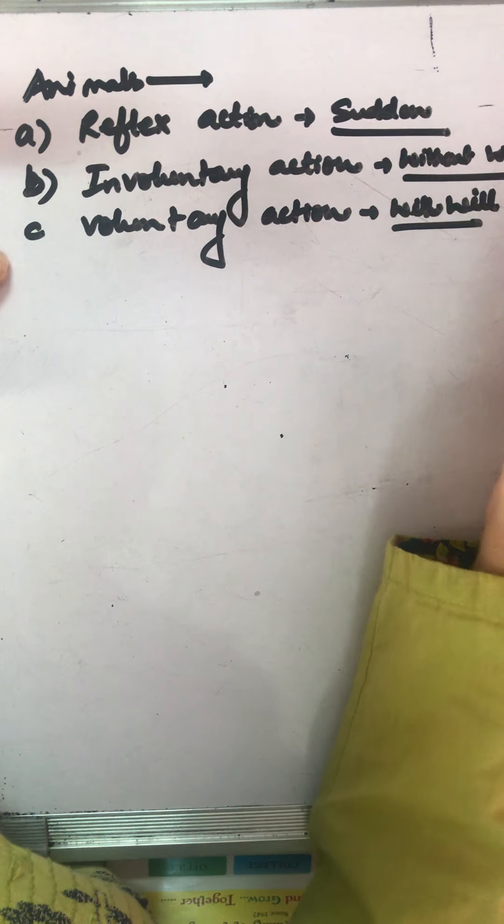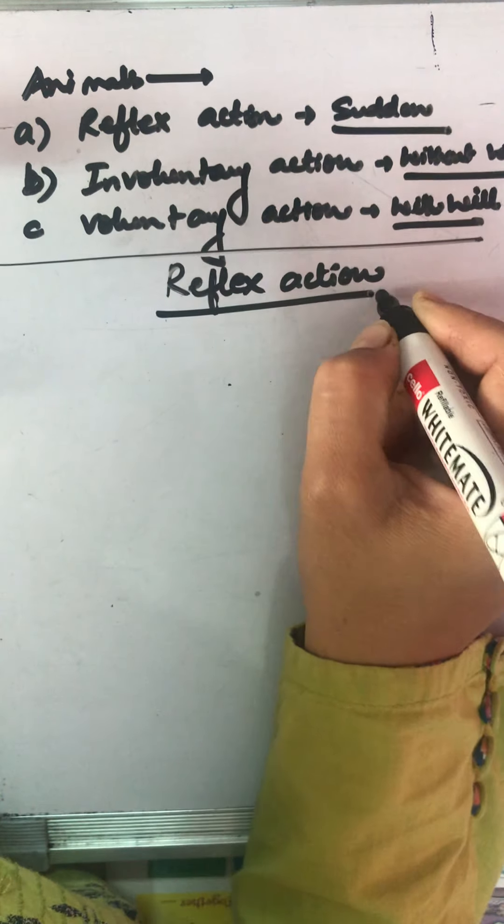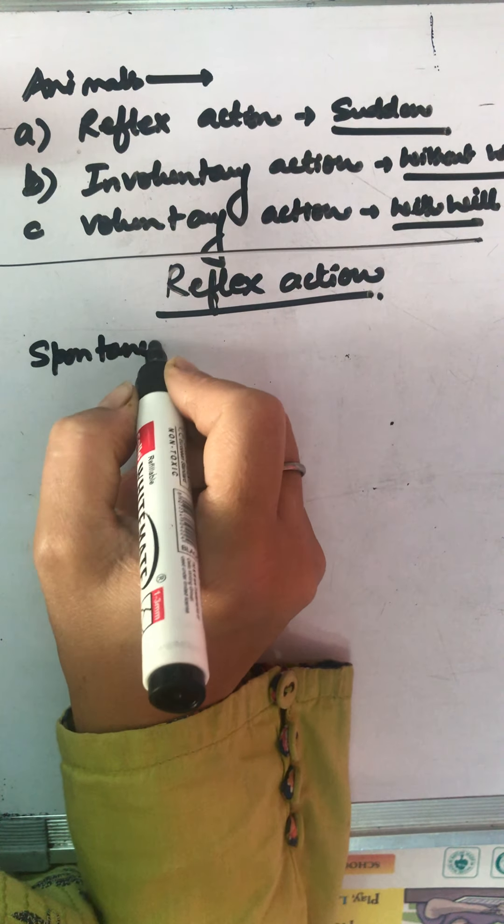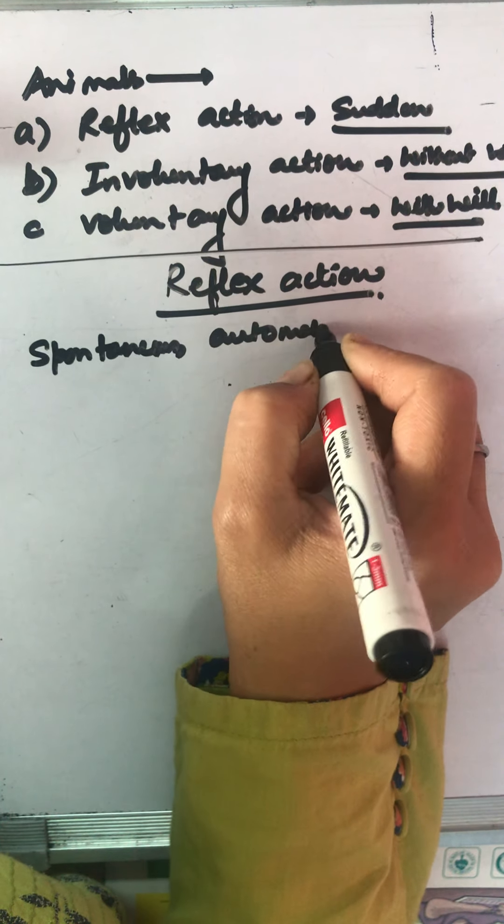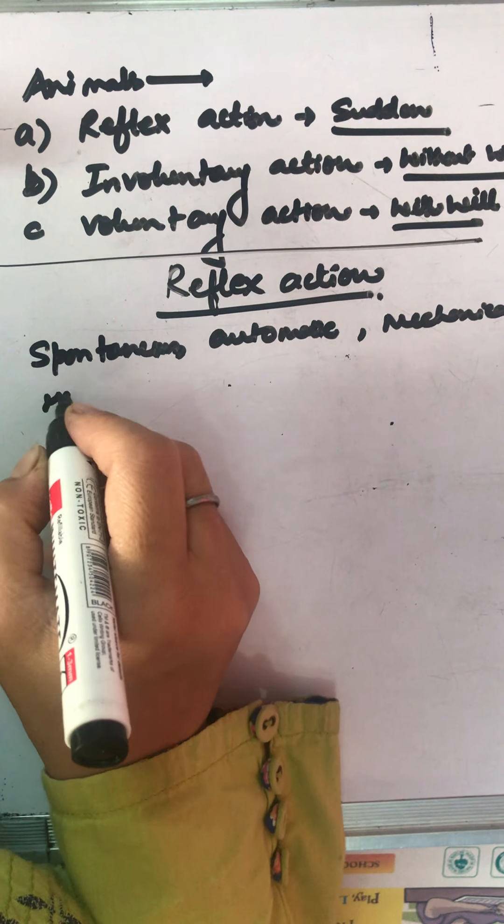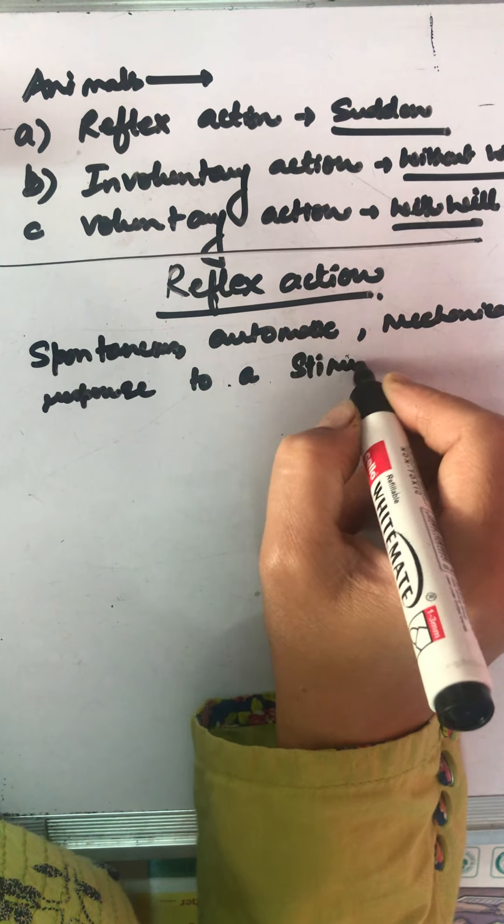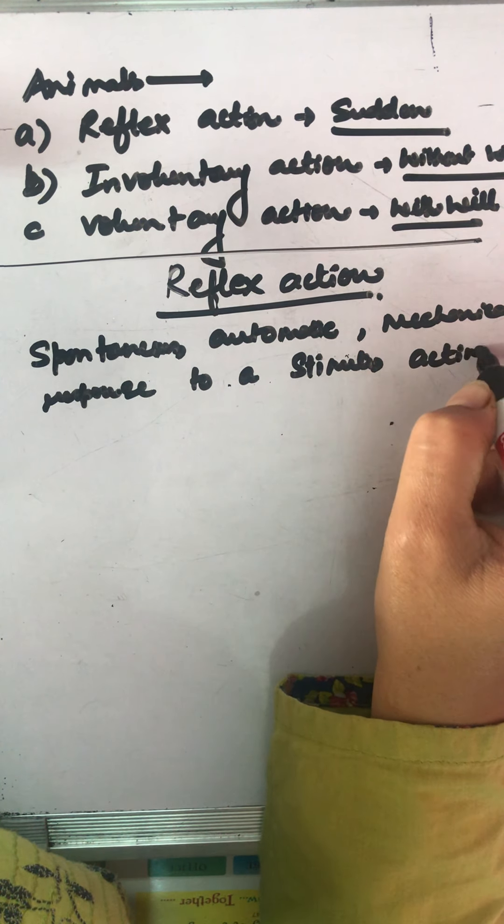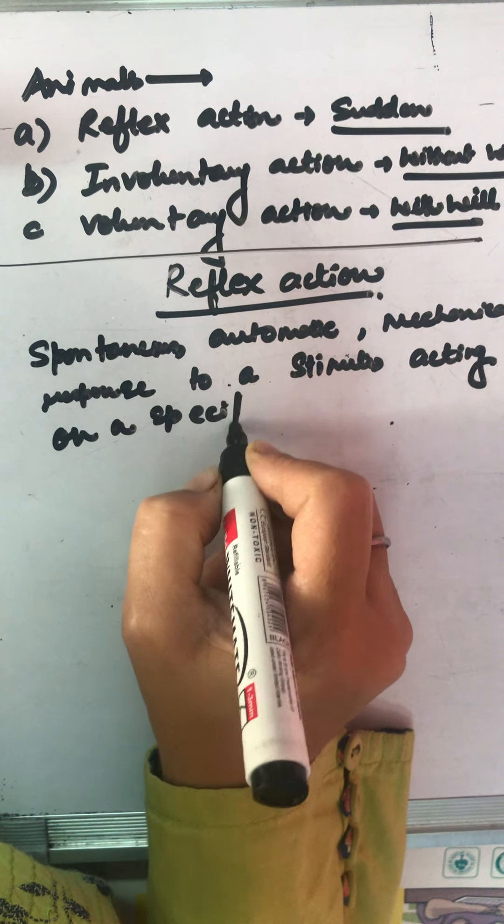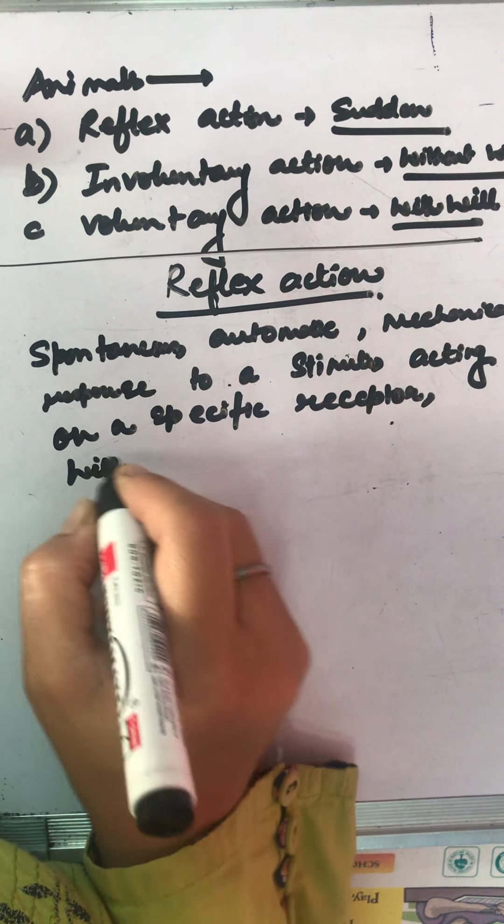Taking up the first topic, reflex actions. What do we mean by a reflex action? It is basically spontaneous, automatic, mechanical response to a stimuli acting on a specific receptor without the will of an animal.